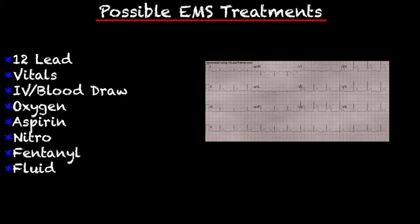Going into the possible EMS treatments: get a 12-lead. As we know, not every heart attack shows up on a 12-lead, so we have to treat our patient's complaint. If our patient has chest pain that we believe could be of a cardiac origin, it's important that we follow our chest pain protocol — get a 12-lead, obtain a set of vitals, get IV access, get a blood draw if your service does that, give oxygen if needed, aspirin, nitro, and fentanyl. I do realize some services still give morphine, but I've seen a shift toward fentanyl for cardiac chest pain. Just follow your protocol. Fluid is an option, but every patient is different, so make that decision based on how your patient is presenting.